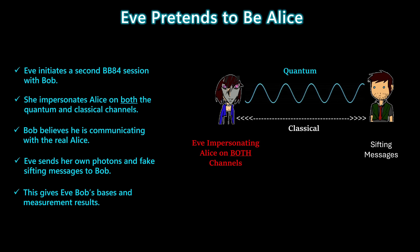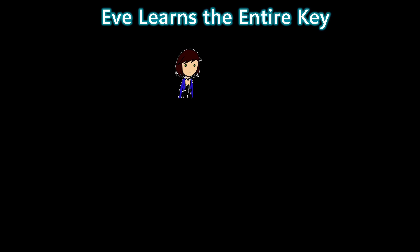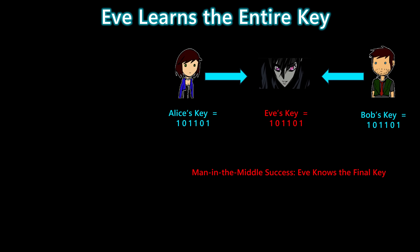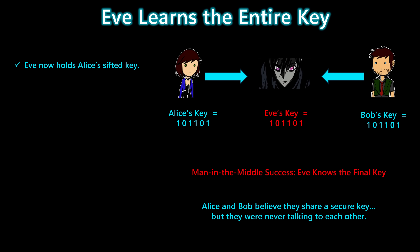This allows Eve to obtain Bob's bases and measurement results, completing the second fake key exchange. Eve holds Alice's sifted key and she also holds Bob's sifted key, both of them perfectly matching.